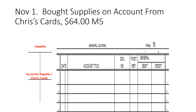Supplies is an asset — our assets are going up because we bought supplies. Assets are increased with a debit because they sit on the left-hand side of the accounting equation. Accounts payable is going up; we owe someone more money. It's a liability — it sits on the right-hand side of the accounting equation and is increased with a credit of $64.